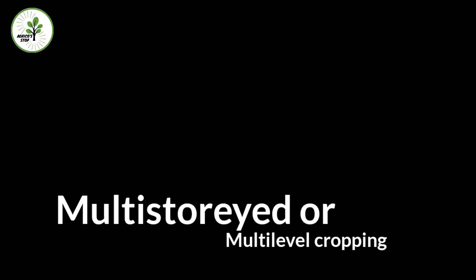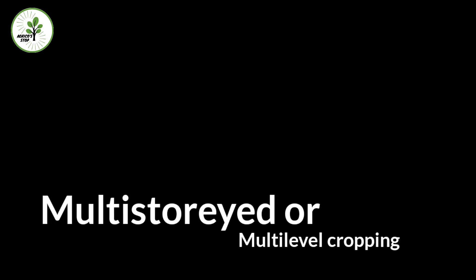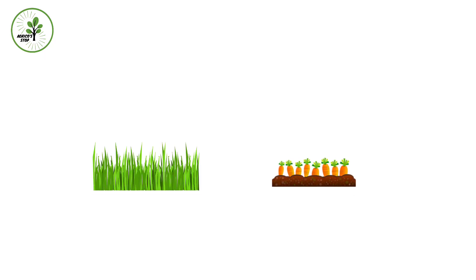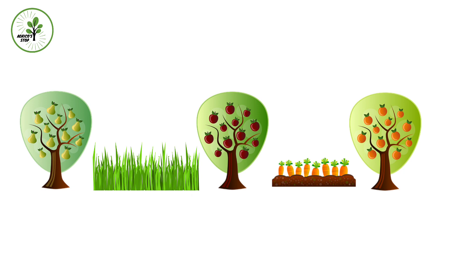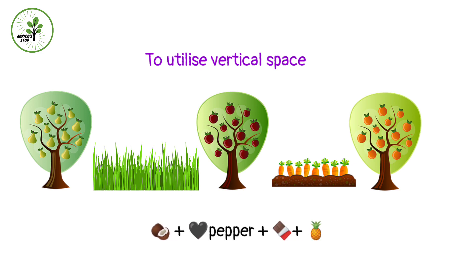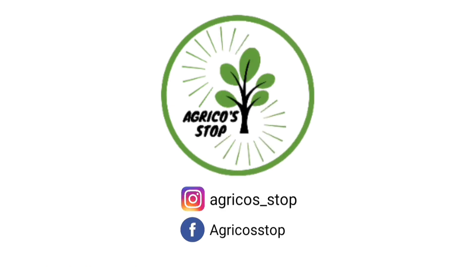The final system of multiple cropping is multi-storied, multi-tiered, or multi-level cropping. Here, short-duration quick-growing fruits, vegetables, or fodder crops are grown in the interspaces of horticultural, fruit, and plantation crops. The objective is to utilize vertical space. For example: coconut plus black pepper plus cacao plus pineapple. In the next video we'll see the types of intercropping.